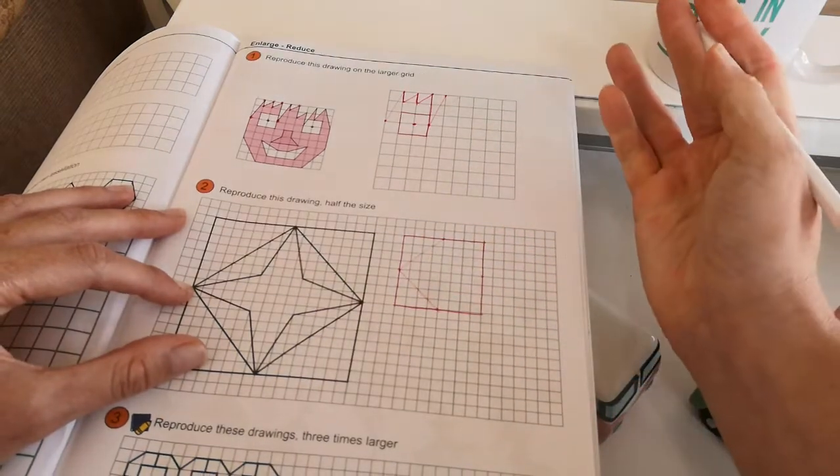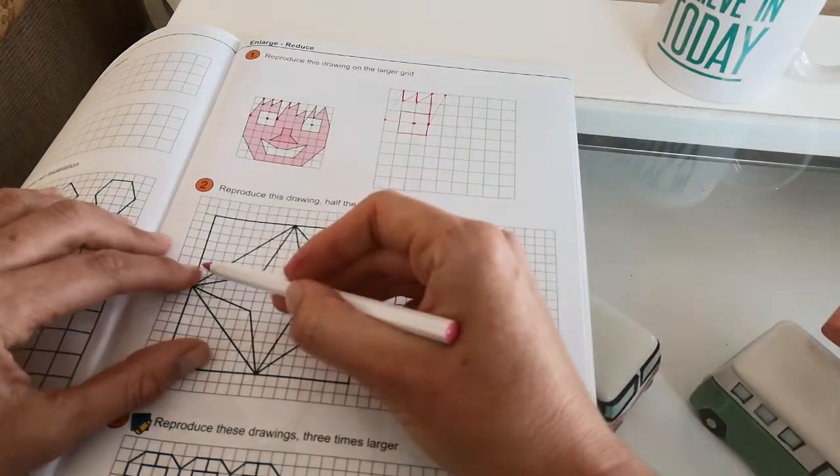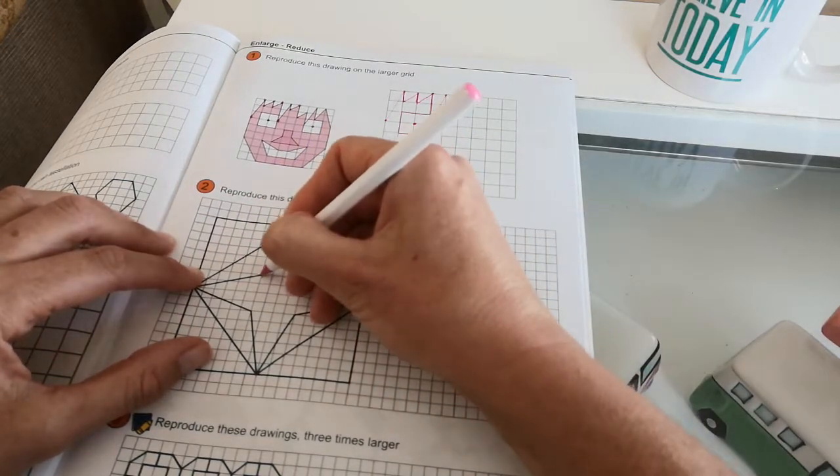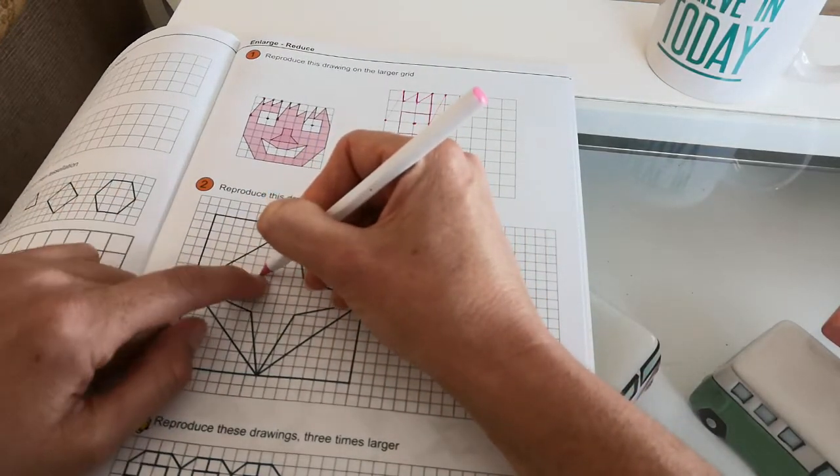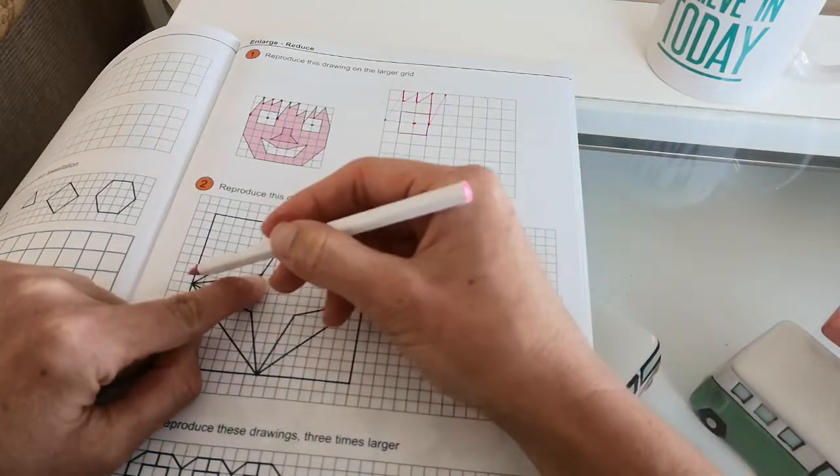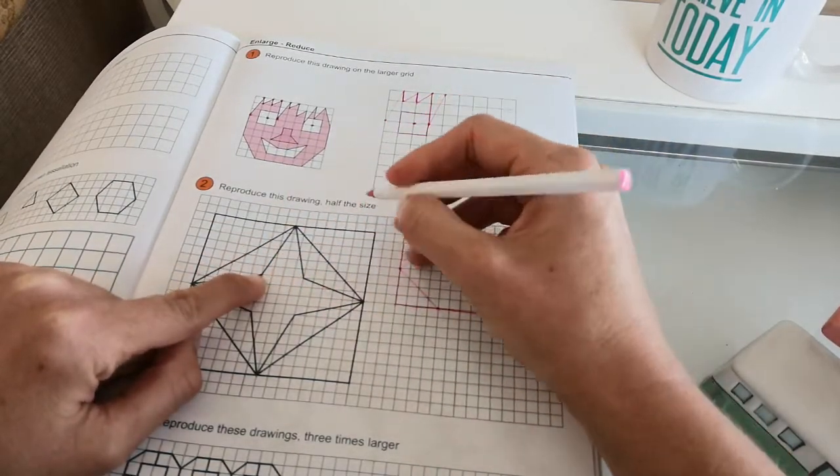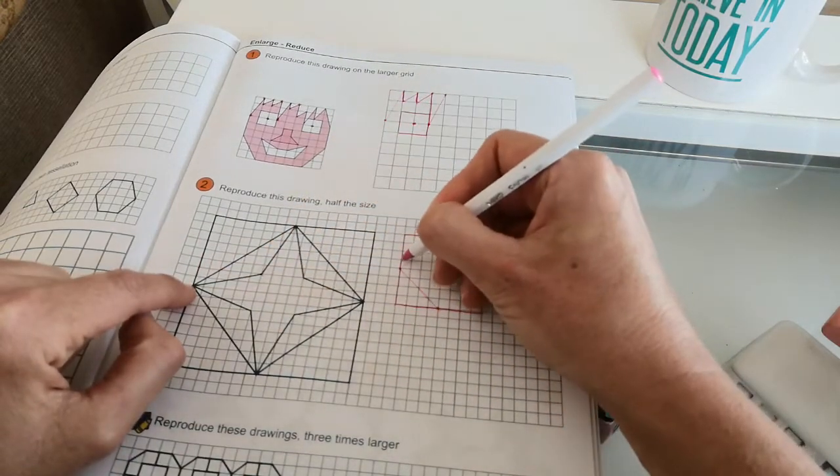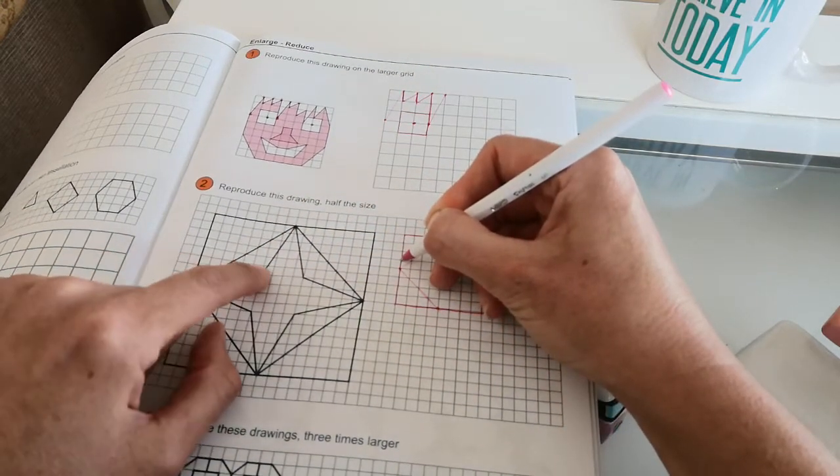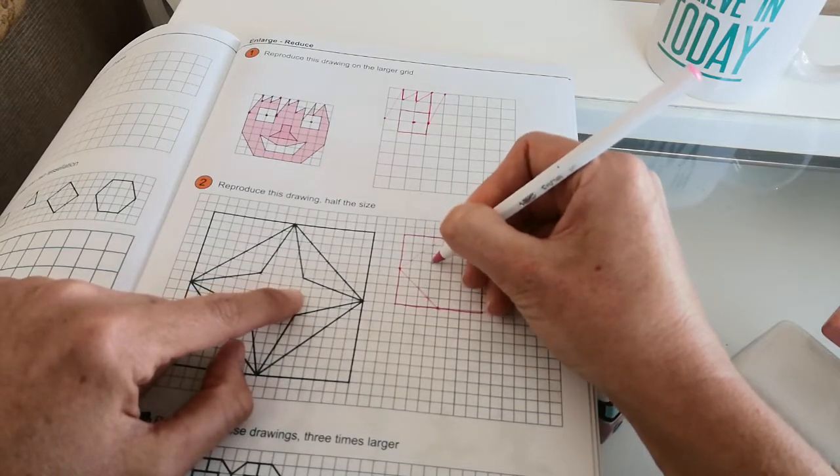I'm not going to do it all for you. Okay, and then if you count, let's see, this point here you count it's one, two, three, four, five, six from the side, and it's one, two up. Okay, now if it's two squares up over here, it'll be only one square up here. And it was six across, so it'll be one, two, three across.